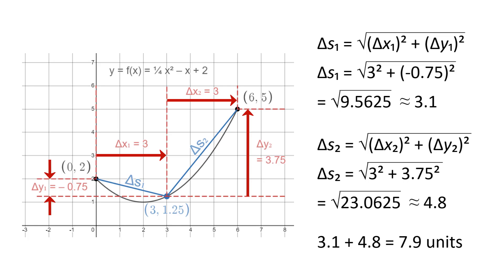As expected, this is longer than the straight line distance of 6.7 units. It is still a little shorter than the length of the curve, though. For each of the two segments, the straight segment is still the shortest path between the endpoints, so the curve is a little longer.